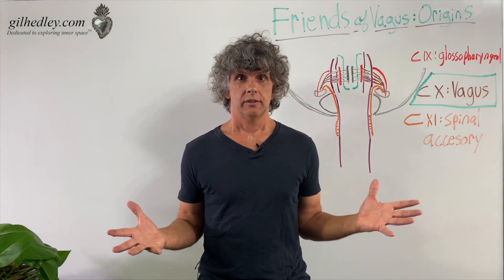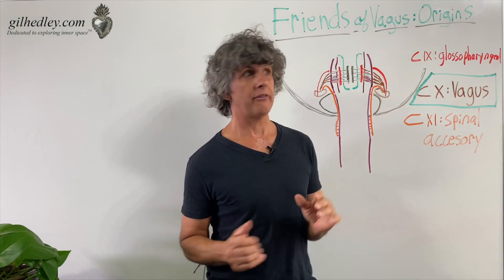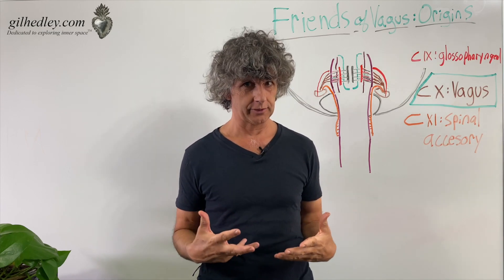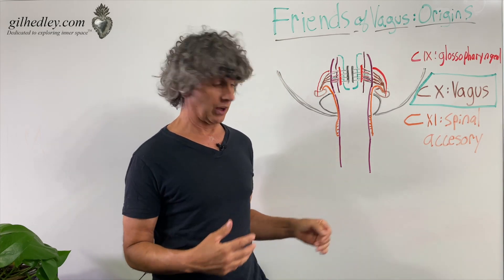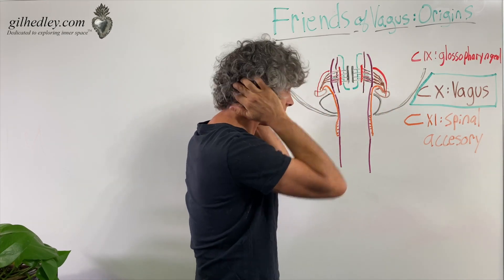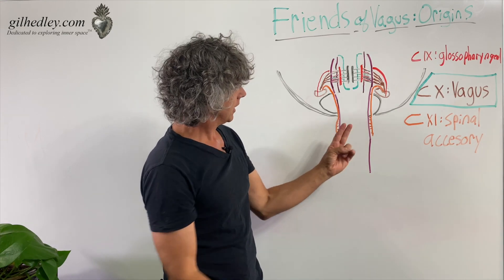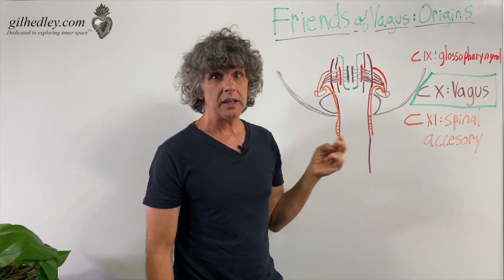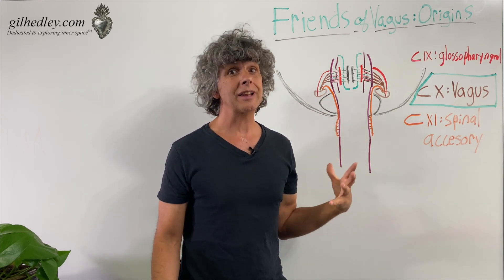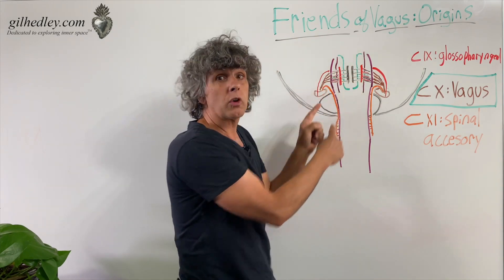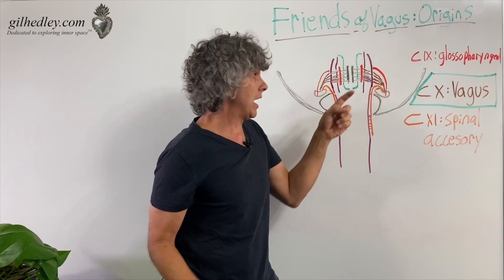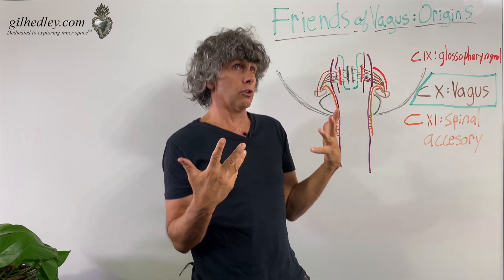Continuing with our saga — the great wandering story of the vagus nerve — I'd like to do an origin story and talk about the friends of the vagus and the vagus itself. Here we have the base of the skull, the spinal cord, and the medulla oblongata. In other videos I've discussed the vagal nuclei, the locus on the medulla oblongata of the nerve bodies of the vagus nerve group.